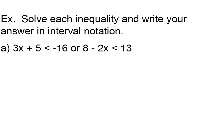All you're going to do is solve each inequality individually, and from there you're going to put your two answers together and consider them both at the same time. On the left, I'm going to have 3x is less than negative 21 by subtracting the 5 across. Divided by 3, I get x is less than negative 21.